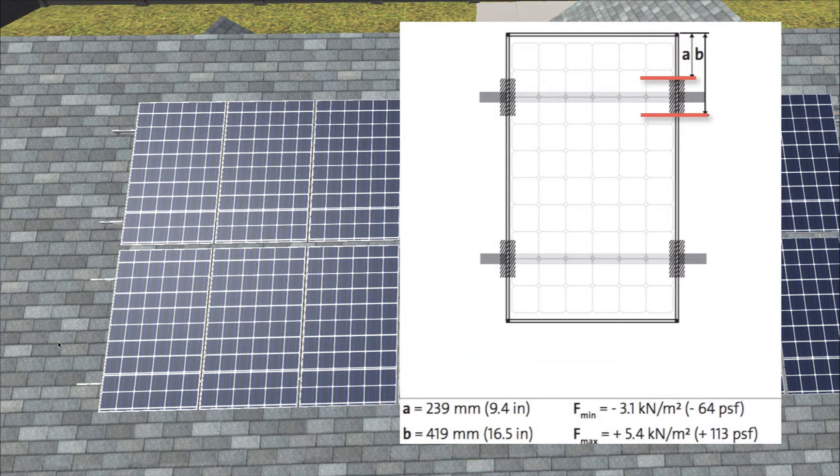So what they're saying is, you can mount their module onto a rail anywhere within this range. So long as the rail is at least 9.4 inches in and no more than 16 and a half inches in, then you can put it anywhere in that range.